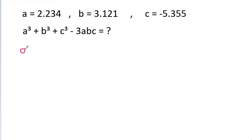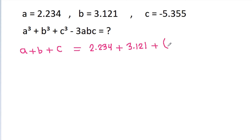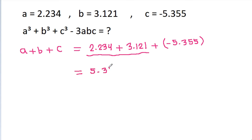So, if we add a, b, and c, then a is 2.234, plus b is 3.121, plus c is minus 5.355. And 2.234 plus 3.121 is 5.355, minus 5.355, and it is 0.